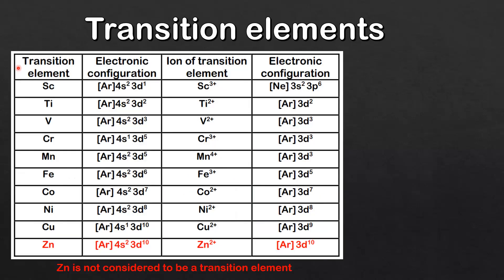In this table we have the transition element, the electronic configuration, the ion of the transition element, and the electronic configuration of the ion. Even though zinc is included at the bottom of the table, please note that zinc is not considered to be a transition element.